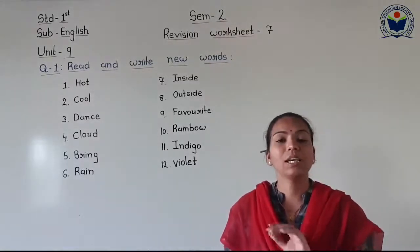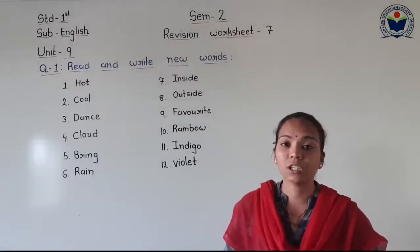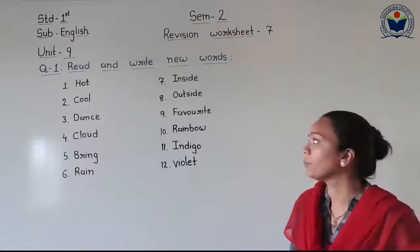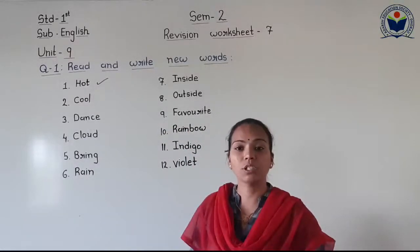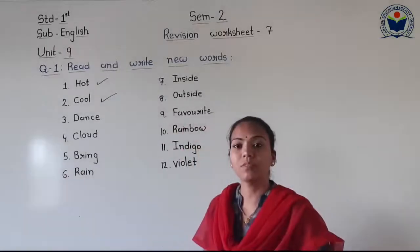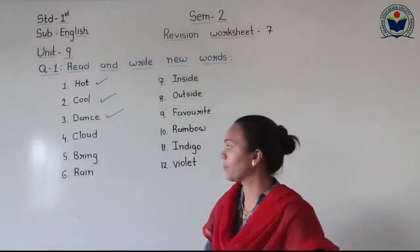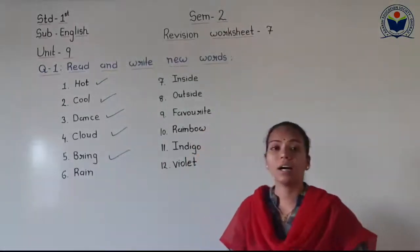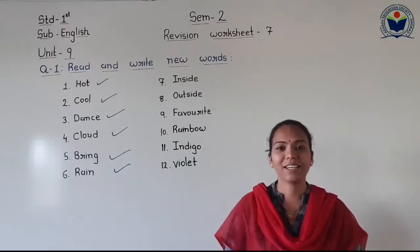Let's start reading our new words. The first new word is H-O-T, hot. Please repeat after me. Next is C-O-L, cool. One more time: C-O-L, cool. D-A-N-C-E, dance. D-A-N-C-E, dance. C-L-O-U-D, cloud. C-L-O-U-D, cloud. B-R-A-I-N, brain. B-R-A-I-N, brain. R-A-I-N, rain. R-A-I-N, rain.